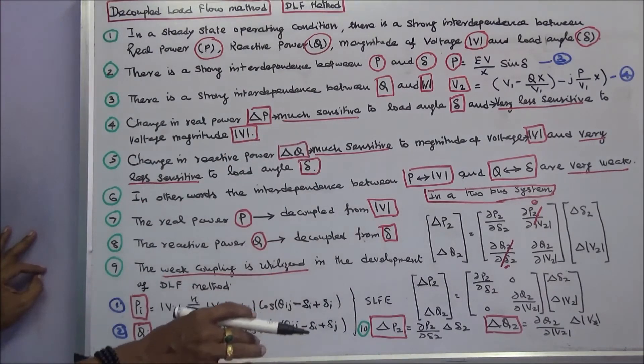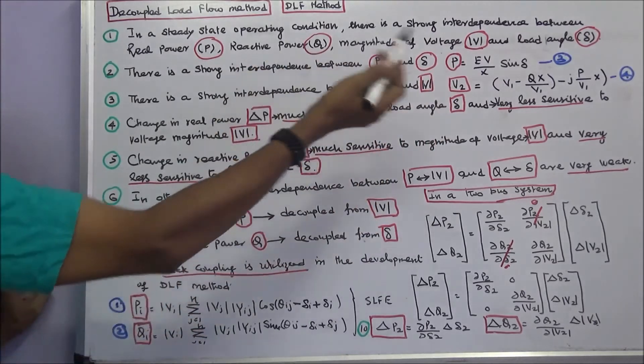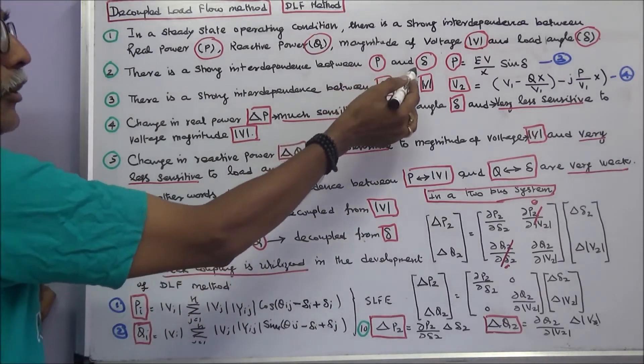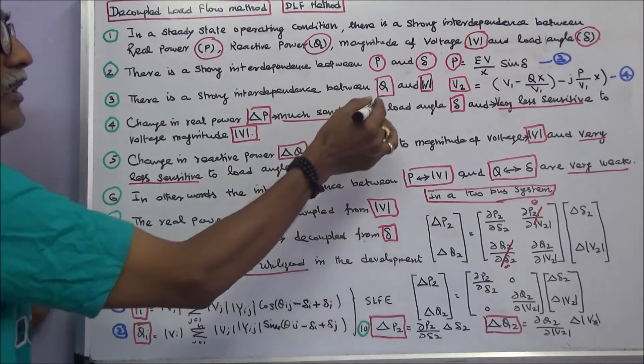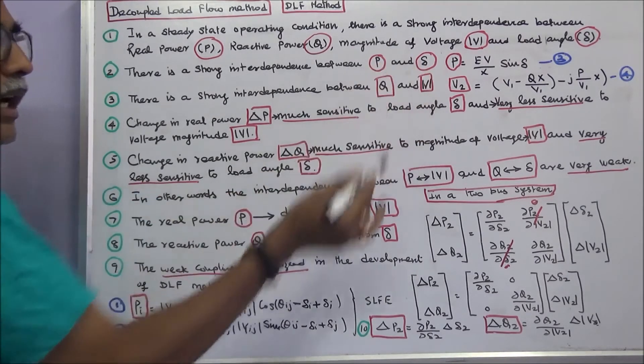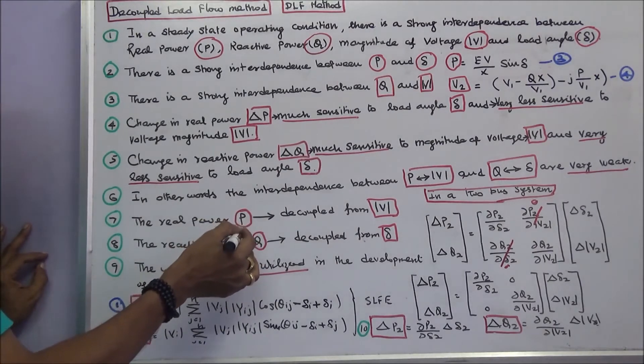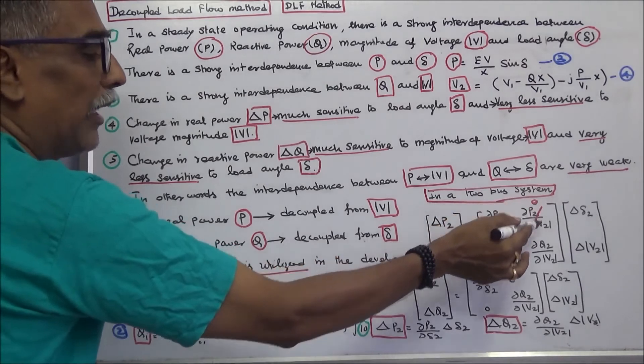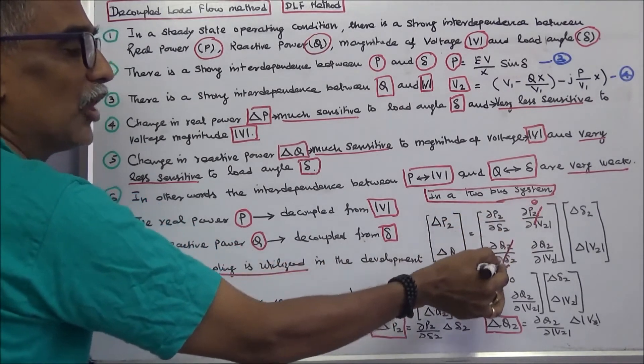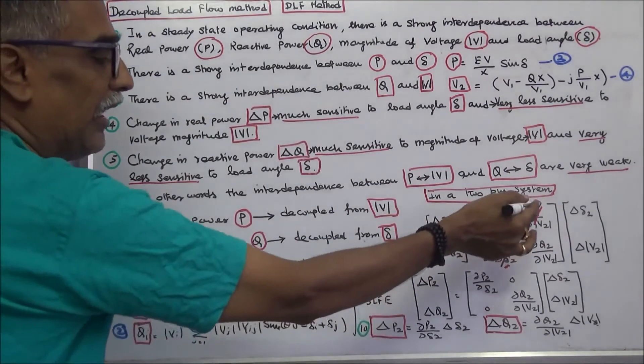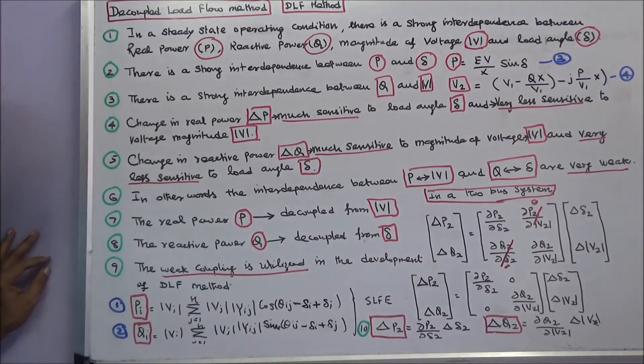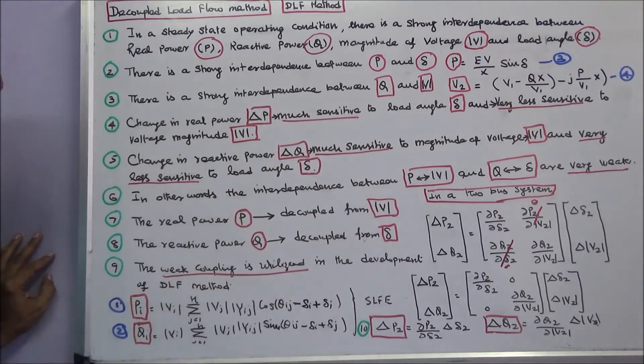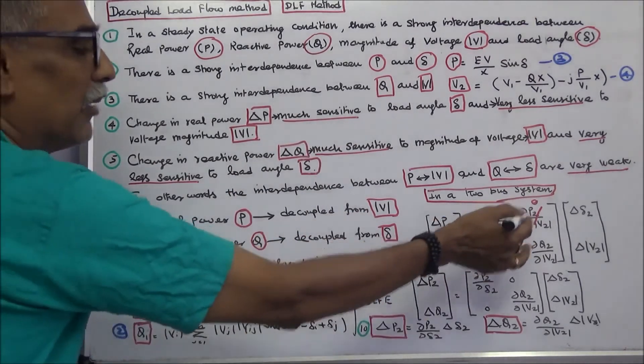So in the decoupled method, P is very sensitive to delta and less sensitive to the voltage modulus of V. Q is very sensitive to modulus of V and less sensitive to delta. Therefore, J2 and J4 are zero. This is the decoupled method, where P and Q calculations are separated.